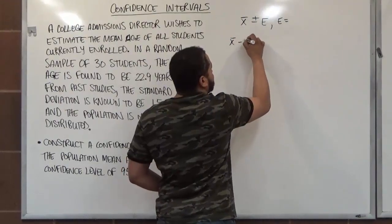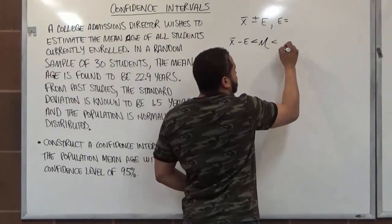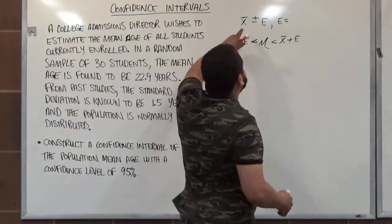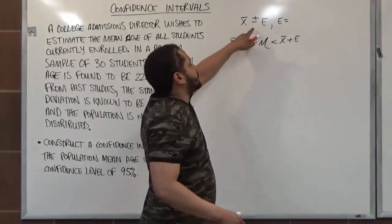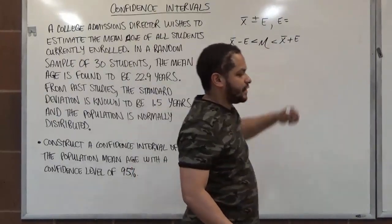is taking x̄ and subtracting e, and making this less than the mu symbol, less than x̄ plus e. Either way, we could get the confidence interval by adding and subtracting to the estimate, or doing it this way, and manually evaluating the left and the right.